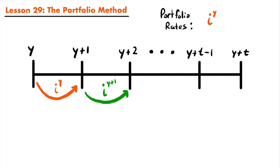We continue that pattern: to accumulate interest from year Y plus two to year Y plus three, we would have another portfolio rate represented with i superscript Y plus two. That continues until the final period, where one more portfolio rate accumulates interest from year Y plus T minus one to year Y plus T, corresponding to the year Y plus T minus one.